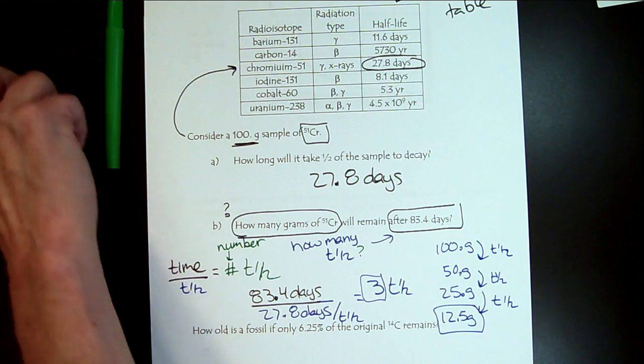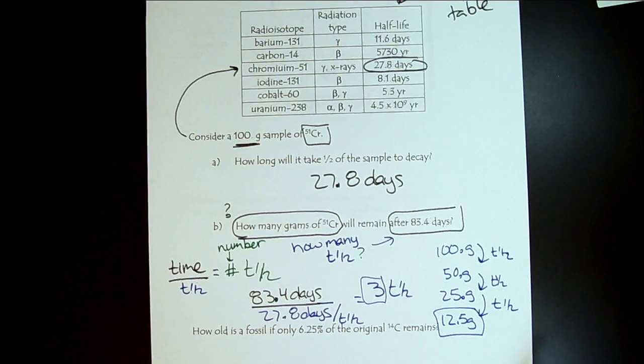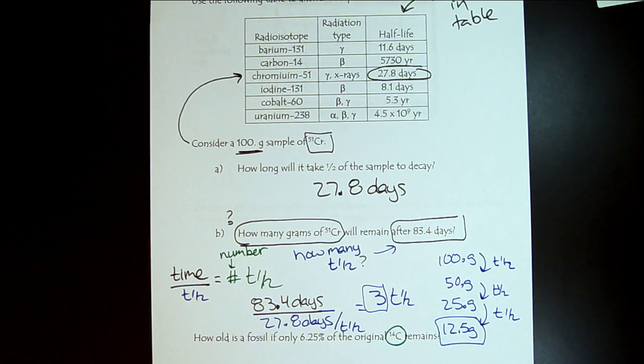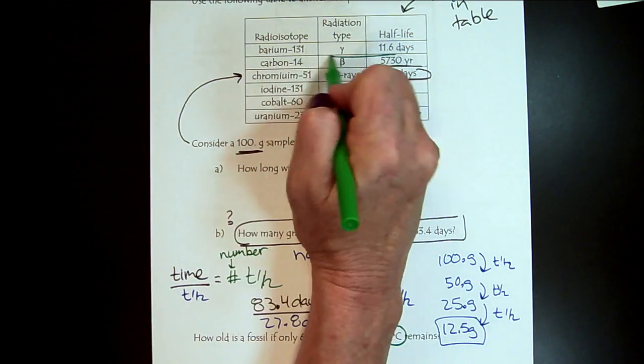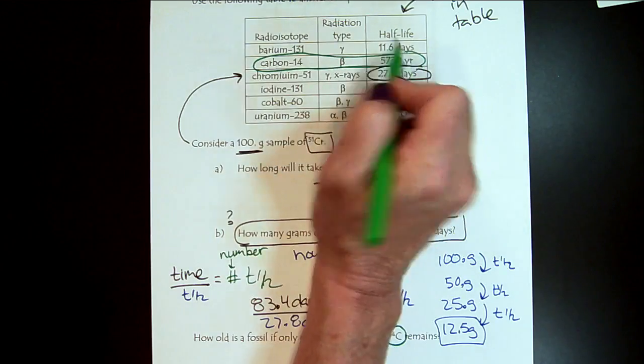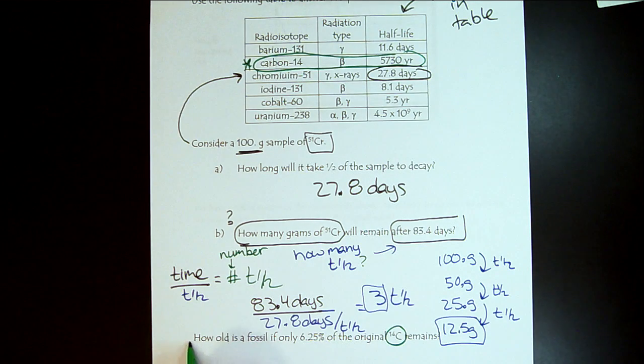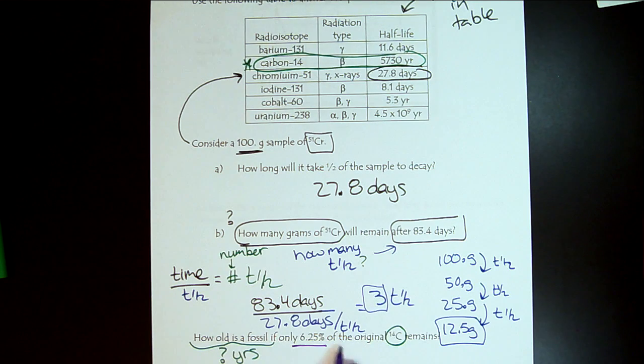Now let's do one more practice on this page before we move on. This time, we're going to look at carbon-14. And carbon-14 can be used to date fossils. So now we would want to look up the half-life for carbon-14. And here it is. We want to know how old is a fossil, so that would be how many years old is a fossil.